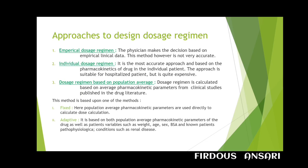The third approach is the dosage regimen based on population average. Here, the regimen is calculated based on average pharmacokinetic parameters from clinical studies published in drug literature. For instance, population data indicates a significant relationship between clearance of digoxin and creatinine clearance — as creatinine clearance decreases, so does digoxin clearance. This method is based on two models: fixed and adaptive. It is similar to checking online reviews before purchasing.